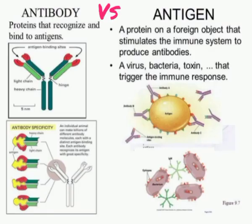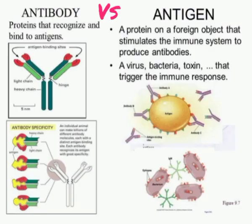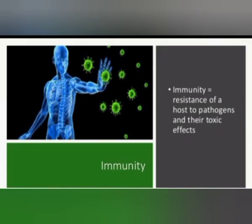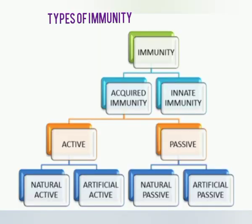Antibodies are proteins that recognize and bind to antigens. Antigens are proteins or any kind of foreign particle that enters our body. The antibody will bind with the antigen and protect our body to fight against any kind of infections or pathogens. Immunity gives resistance of an organism against any kind of pathogens.